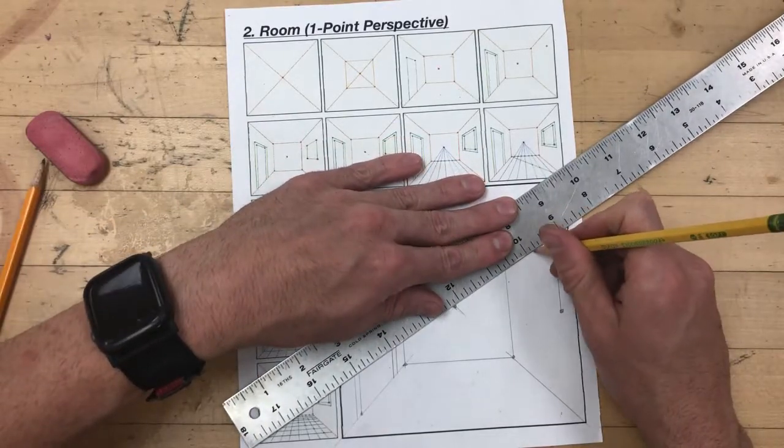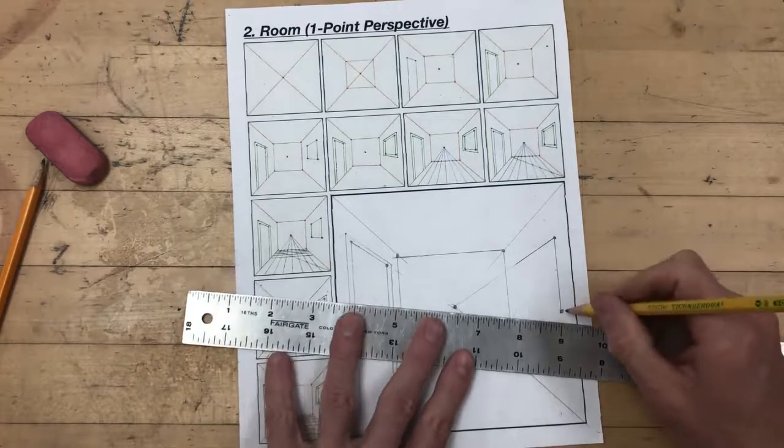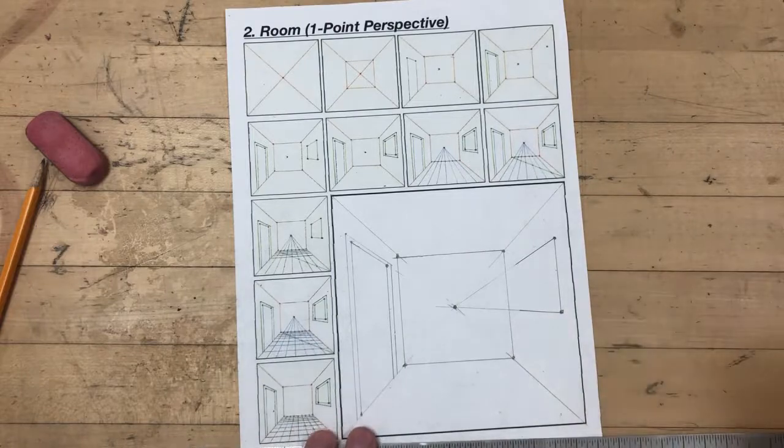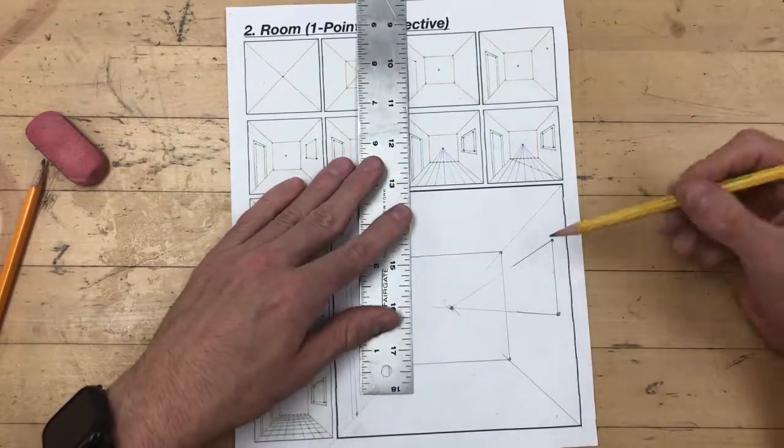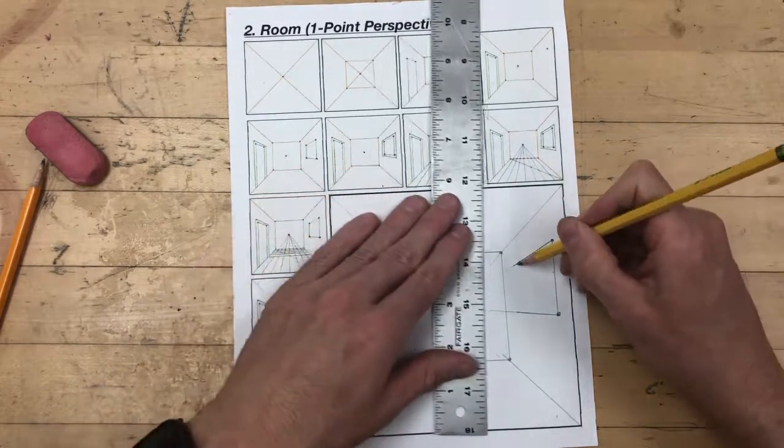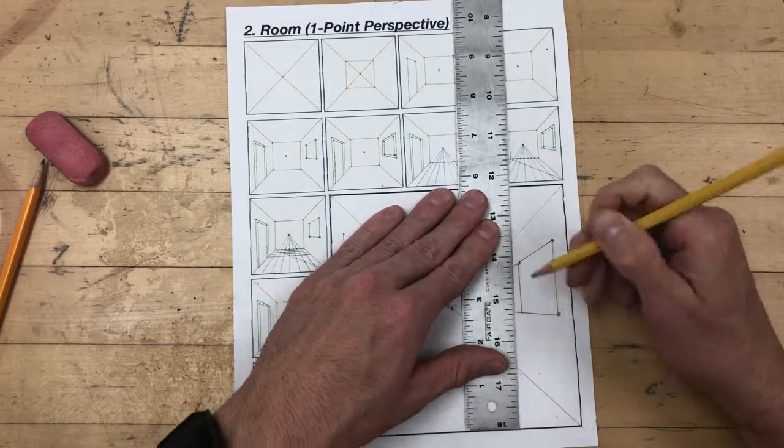If you need to connect it all the way back to make sure you're doing it correctly, that's fine, just do it lightly. Next I'm going to pick another point on that top orthogonal line, make another dot, line my ruler up to the bottom of the drawing area, and draw down until it intersects.